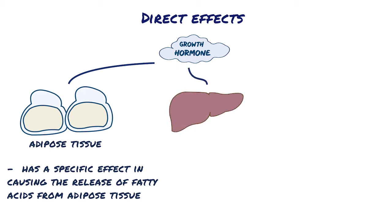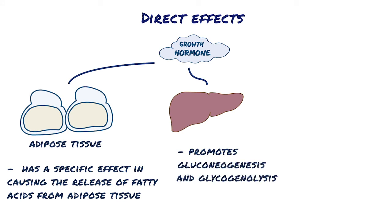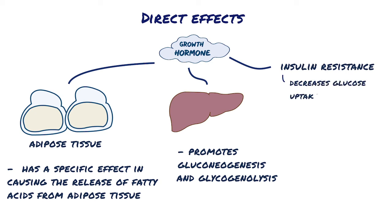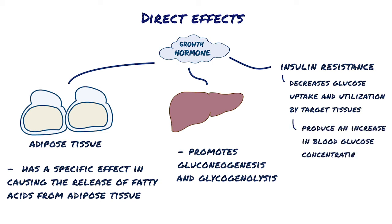In the liver, growth hormone promotes gluconeogenesis, which is the production of glucose, and glycogenolysis, which is the breakdown of glycogen. Growth hormone causes insulin resistance and decreases glucose uptake and utilization by target tissues, such as muscle and adipose tissue. These effects are called diabetogenic because they produce an increase in blood glucose concentration, as occurs when insulin is lacking or when tissues are resistant to insulin.